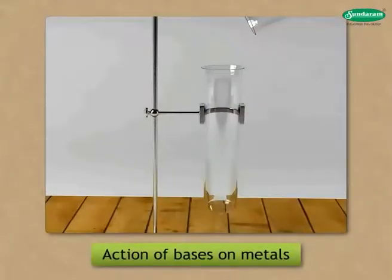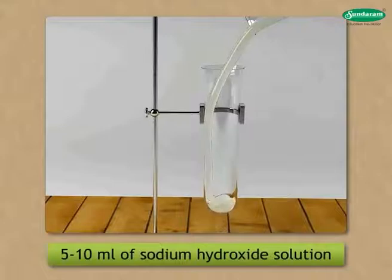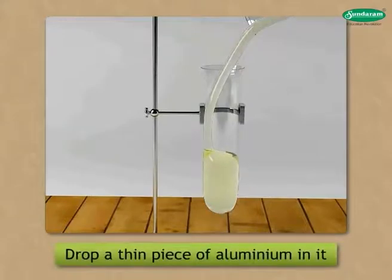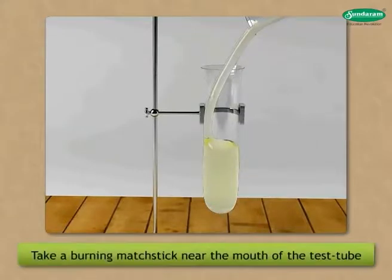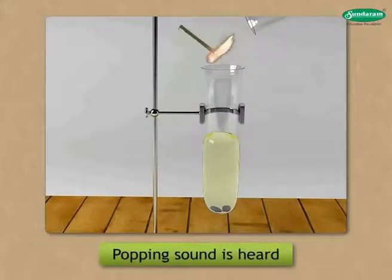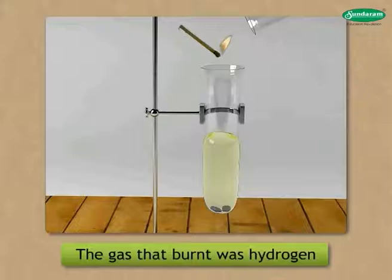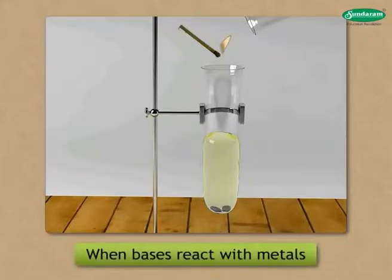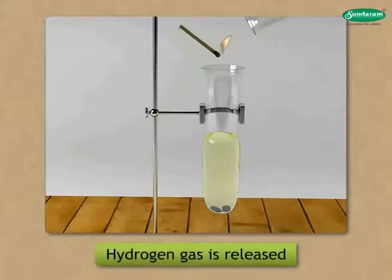Action of bases on metals: in a test tube, take 5 to 10 millilitres of sodium hydroxide solution. Drop a thin piece of aluminium in it, then take a burning matchstick near the mouth of the test tube. A popping sound is heard — the gas that burnt was hydrogen. Hence, we can conclude that when bases react with metal, hydrogen gas is released.